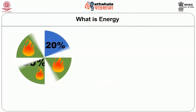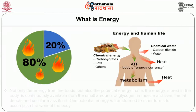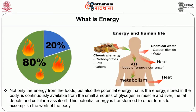In the human body, about 80 percent of energy obtained from food is converted into heat, and the rest is converted into mechanical, osmotic, chemical, and electrical energy to keep the body functioning. The potential energy stored in the body is continuously available from small amounts of glycogen in muscles and liver, the fat depots, and cellular mass itself. This potential energy is transformed to other forms to accomplish the work of the body.